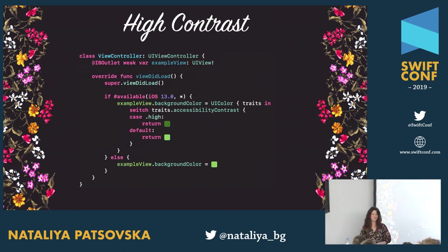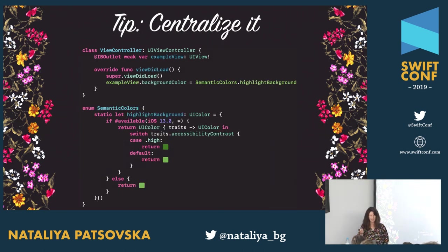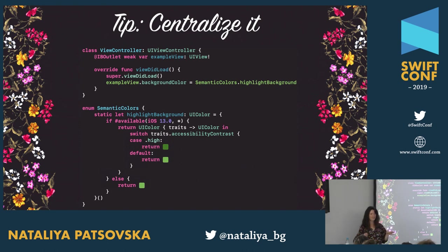You conditionally check for iOS 13 and then check the trait accessibility contrast property — this gives you high contrast, normal contrast, or unspecified. There is a new UIColor initializer from iOS 13 that gives you a block passing the trait collection so you can decide what color to return. It's environment-aware, and no matter where you put this code, it will change the color dynamically. I recommend centralizing this in one place so the API is clean and the magic happens behind the scenes.